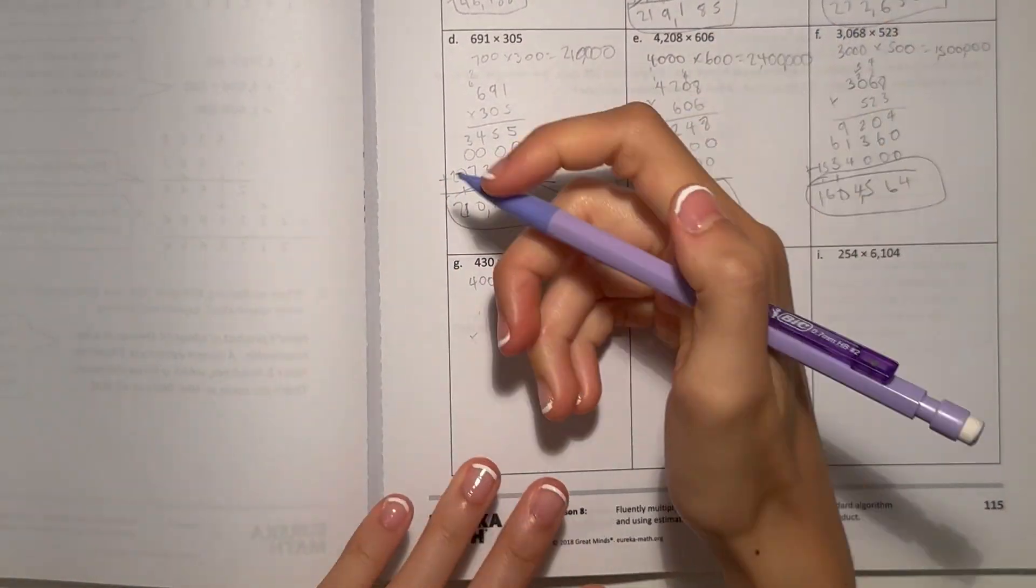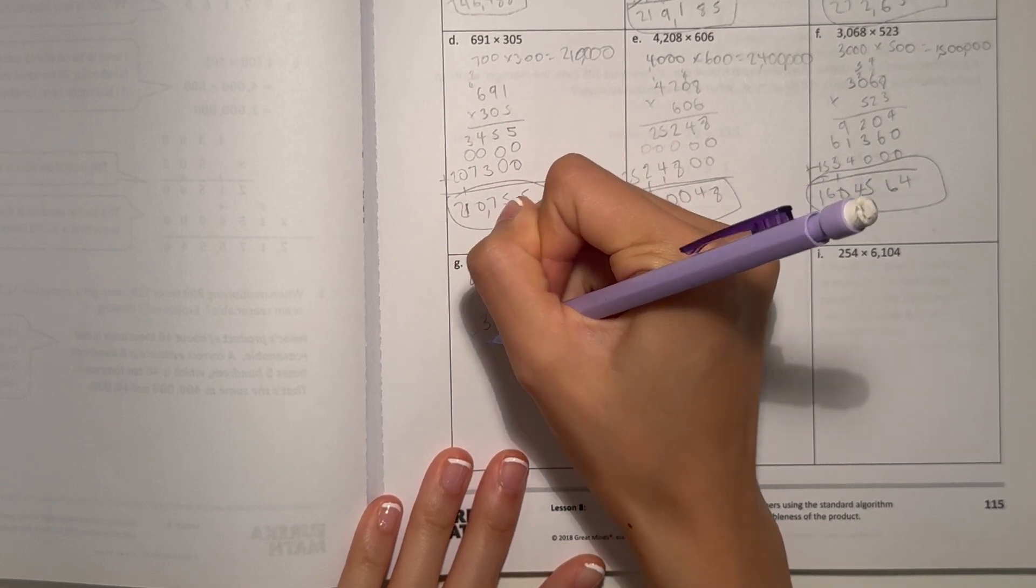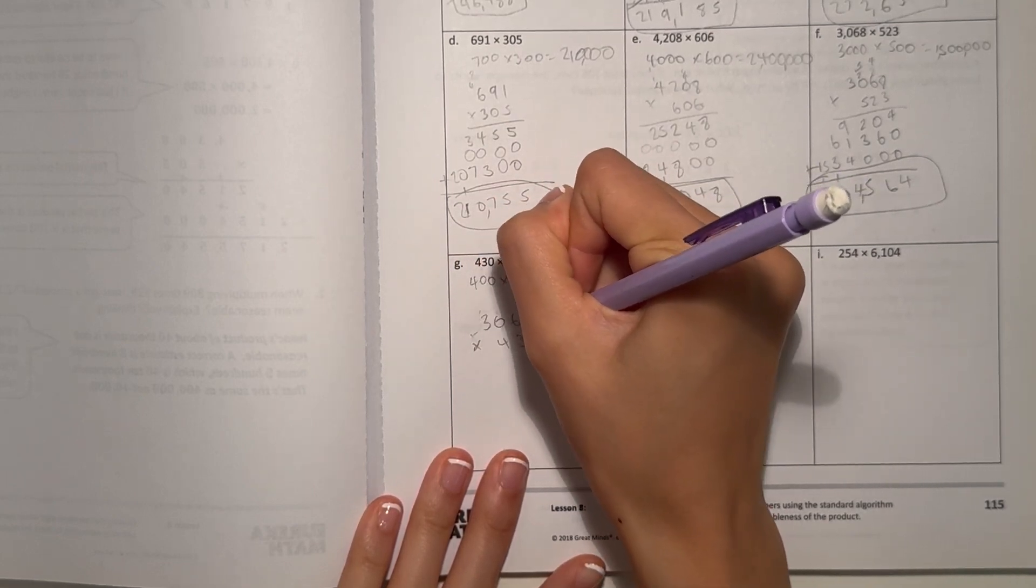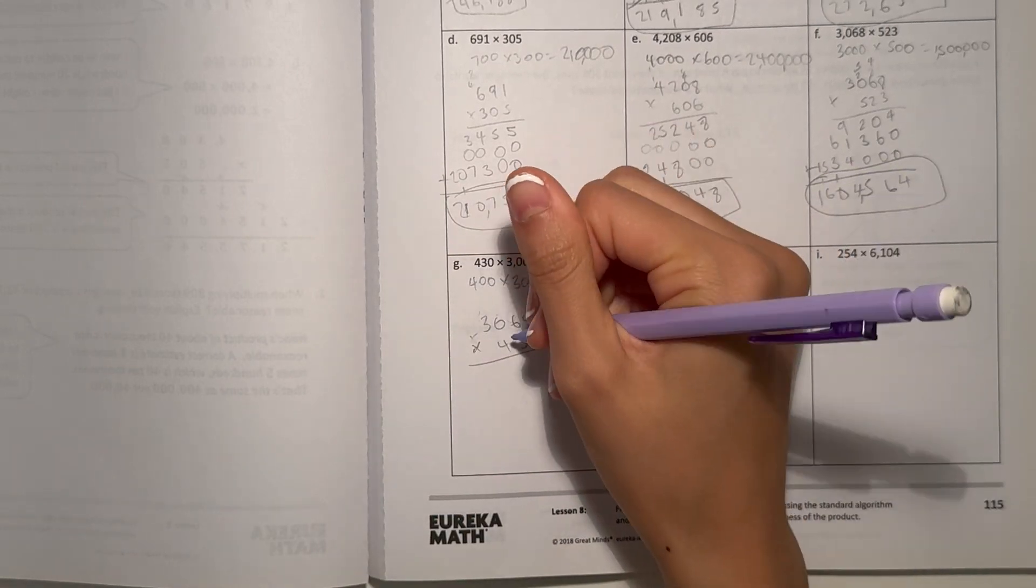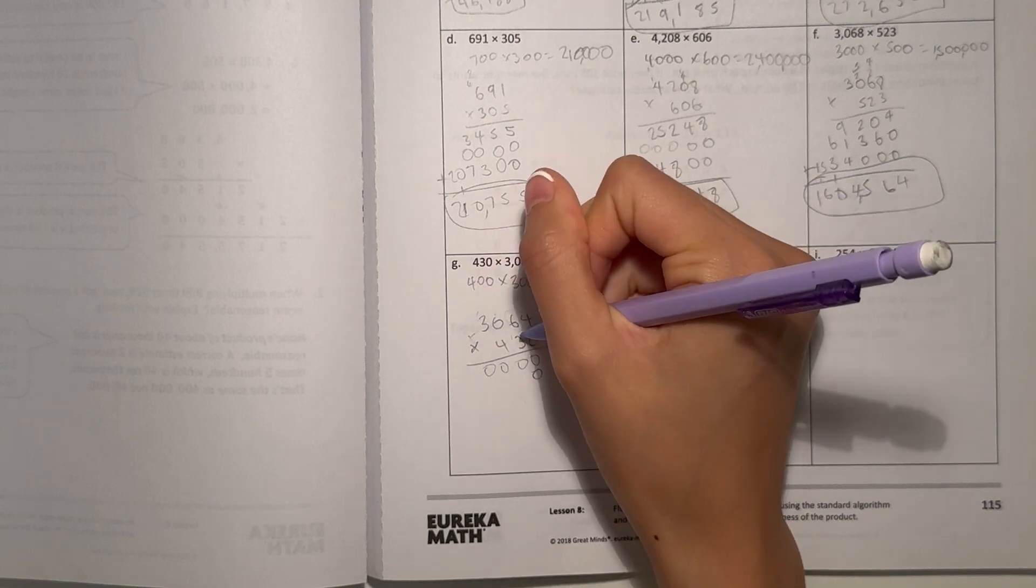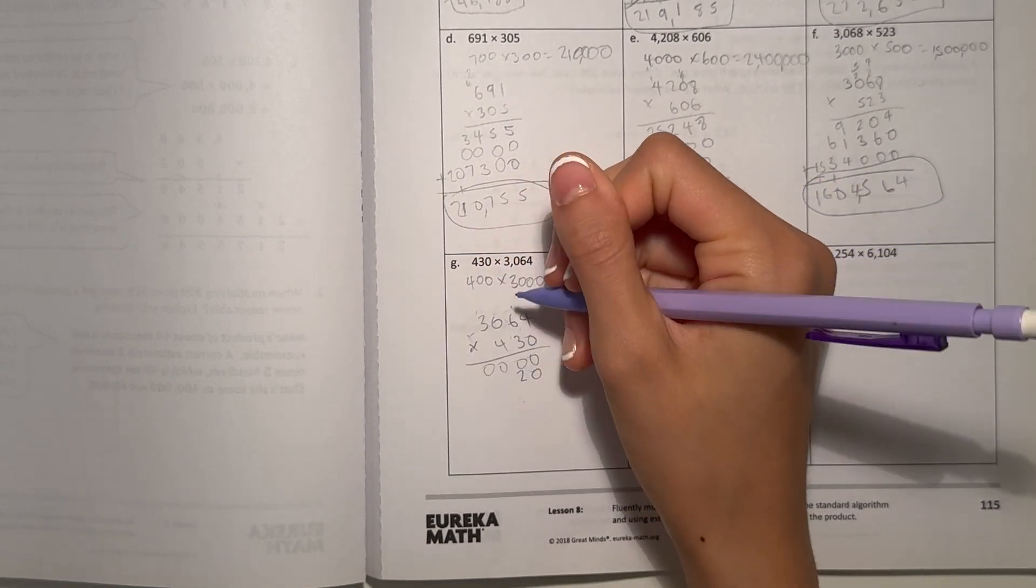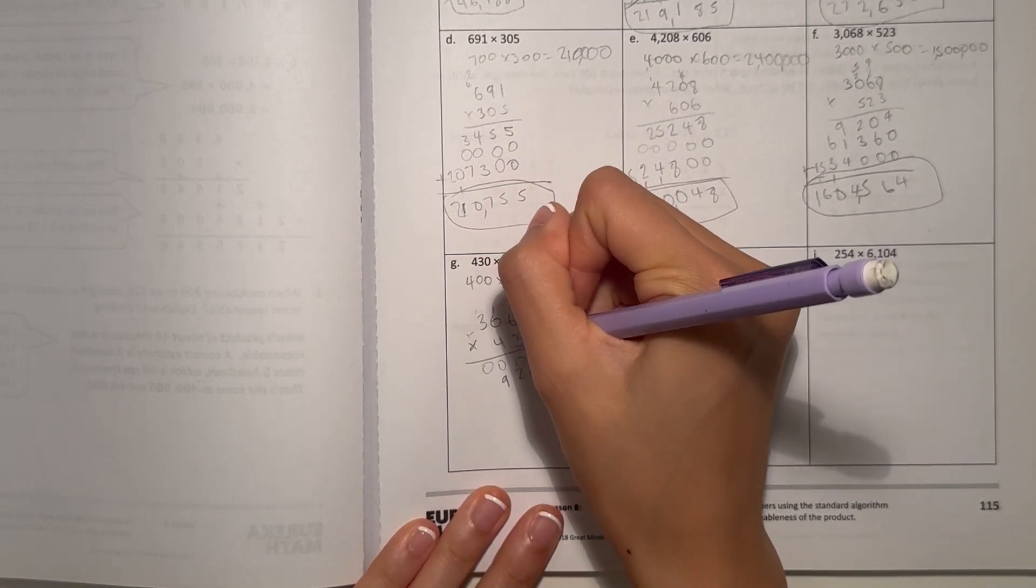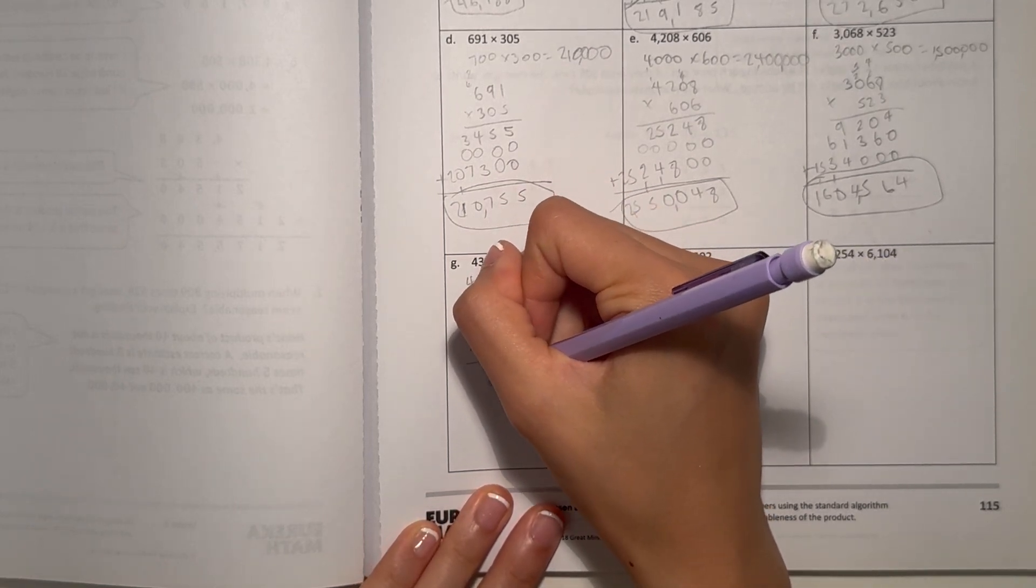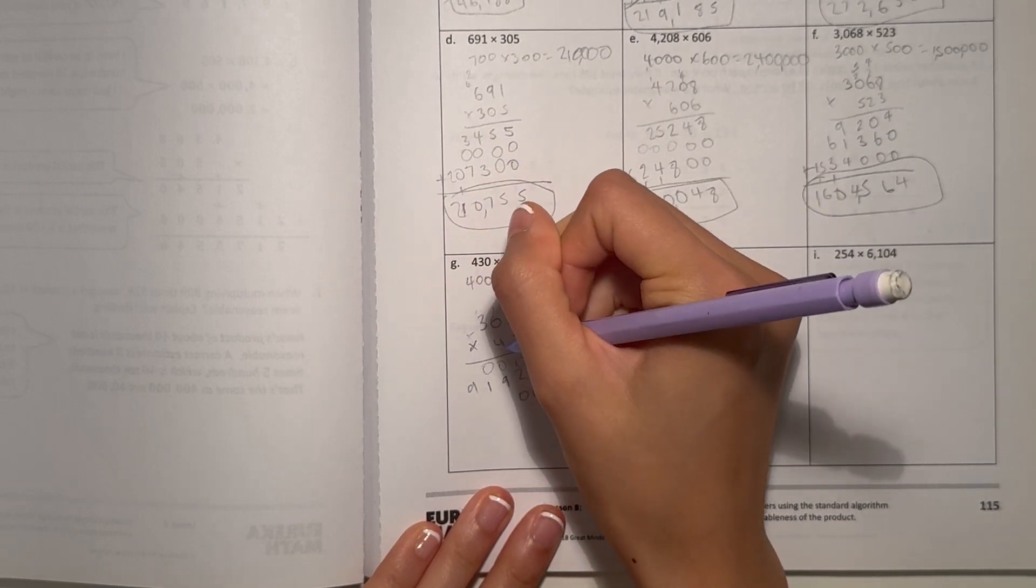We can write the other way. So I have a 0 here. Everything here would just be 0. Now our actual 0. 3 times 4 is 12. 3 times 6 is 18, plus 1 is 19. 3 times 0 is 0, plus 1 is 1. And 3 times 3 is 9.